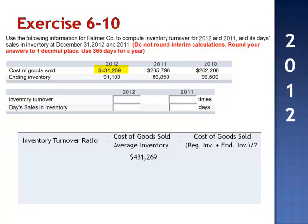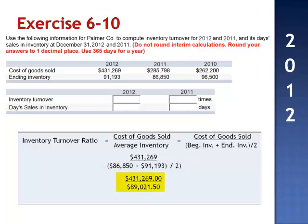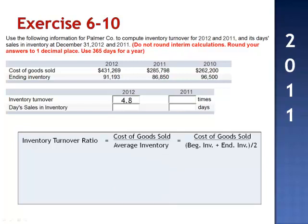Cost of goods sold in 2012 is $431,269. The beginning inventory for 2012 is the 2011 ending inventory, $86,850. Beginning inventory $86,850 plus ending inventory $91,193 divided by 2 is $89,021.50. When we take cost of goods sold $431,269 and divide by the average inventory $89,021.50, inventory is turning 4.8 times per year.